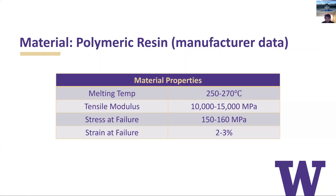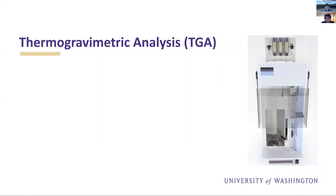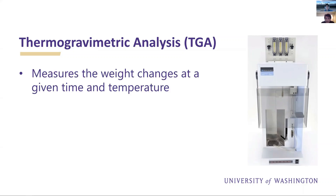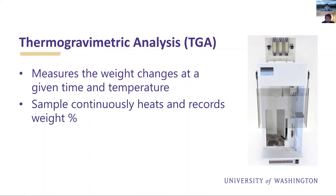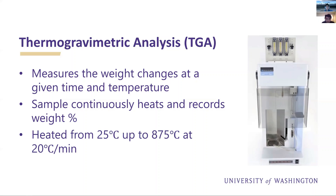I'm going to hand you over to Elijah, who's going to go into our analytical tests. To begin, we'll start with the thermogravimetric analysis, or TGA. You can see to the right a diagram of a TGA used for testing. The TGA mainly measures the weight changes at a given time and temperature. As our sample continuously heats, the weight percent is recorded — the sample is either hanging on or sitting on top of a scale. As the temperature increases, the material degrades, causing the weight percent to change. Typically, it's heated from 25°C to 875°C at a rate of 20 degrees Celsius per minute.